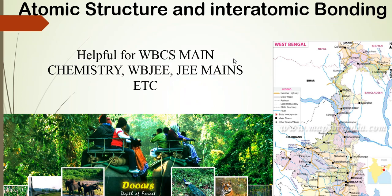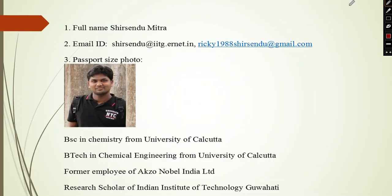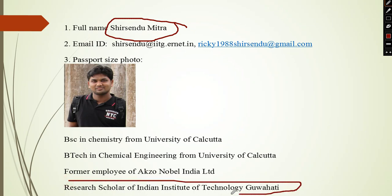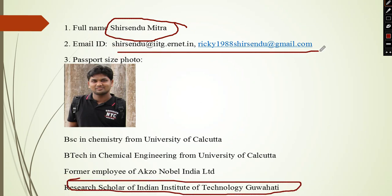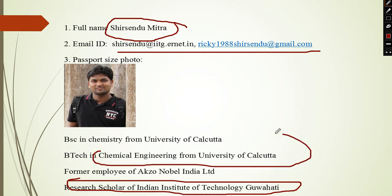I'm Shishu Namitra, a research scholar at the Indian Institute of Technology, Guwahati. Those are my email IDs — if you have any queries you can write me emails and I always reply. I completed BSc in Chemistry Honours from the University of Calcutta, then Chemical Engineering from the same university, and now I am doing research at IIT Guwahati.